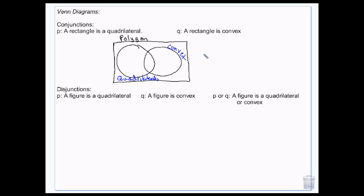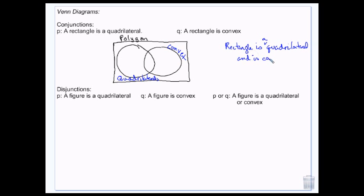We have a bunch of quadrilaterals and a bunch of convex figures, and some things are both. That's where we get a rectangle — a rectangle is a quadrilateral and is convex. So that's P and Q. If I say the rectangle is capital R, he lives in the middle because he's both a quadrilateral and convex, so he lives in both galaxies.